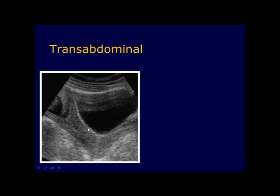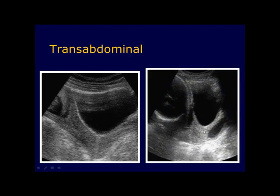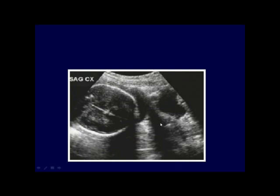This transabdominal sonography of the cervix through a full bladder shows the cervix appearing longer than it actually is. In another image, the fetal head is engaged too low, masking the internal os — so cervical length cannot be measured. In a further image, shadows from the symphysis pubis and fetal head obscure the internal os, external os, and endocervical canal. Therefore, all these images are not acceptable for evaluating the cervix.